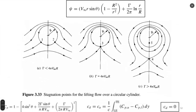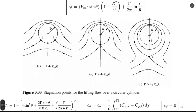Analyzing this equation, we can find different flow patterns. For example, when circulation equals 4πV∞R, there is one stagnation point on the bottom of the cylinder. The flow goes around the cylinder; on the top the flow is faster, on the bottom the velocity is smaller.